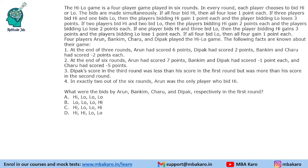Welcome to Aptitude Jab. This set from CAT 2020 Slot 3 DILR describes a High-Low game with four players played in six rounds. In every round, each player chooses to bid high or low, and bids are made simultaneously. If all four bid high, then all four lose one point each.